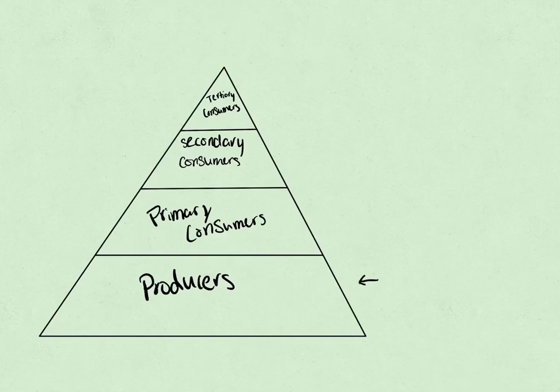Next, we have the primary consumer, which preys on the producers and only has 10% of what the producers have. So let's call this 100%. Let's say that all the energy is in the producers and make that 100%. So primary consumers only get 10% of the energy that's in that environment once they feed off the producers.